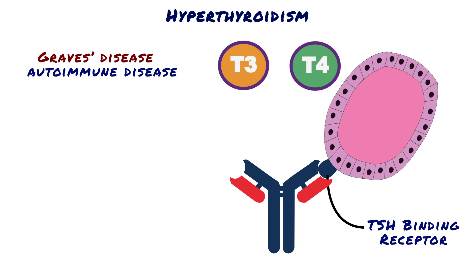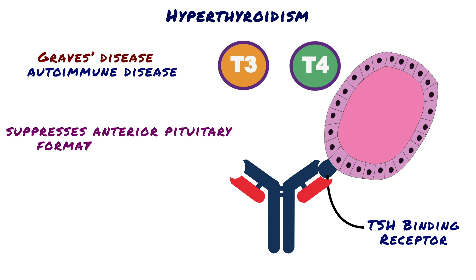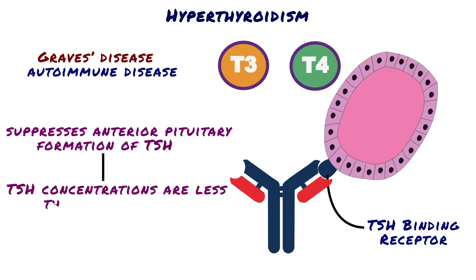The high level of thyroid hormone secretion caused by TSI in turn suppresses anterior pituitary formation of TSH. Therefore, TSH concentrations are less than normal rather than enhanced in almost all patients with Graves' disease.